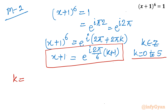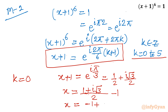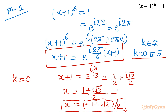For k equal to 0: x plus 1 equals e raised to i pi over 3, which equals cos pi over 3 plus i sin pi over 3, that is 1 over 2 plus i root 3 over 2. Taking away 1 from both sides, x equals minus 1 plus i root 3 over 2. This is the very first complex solution, which you can match with the algebraic method.